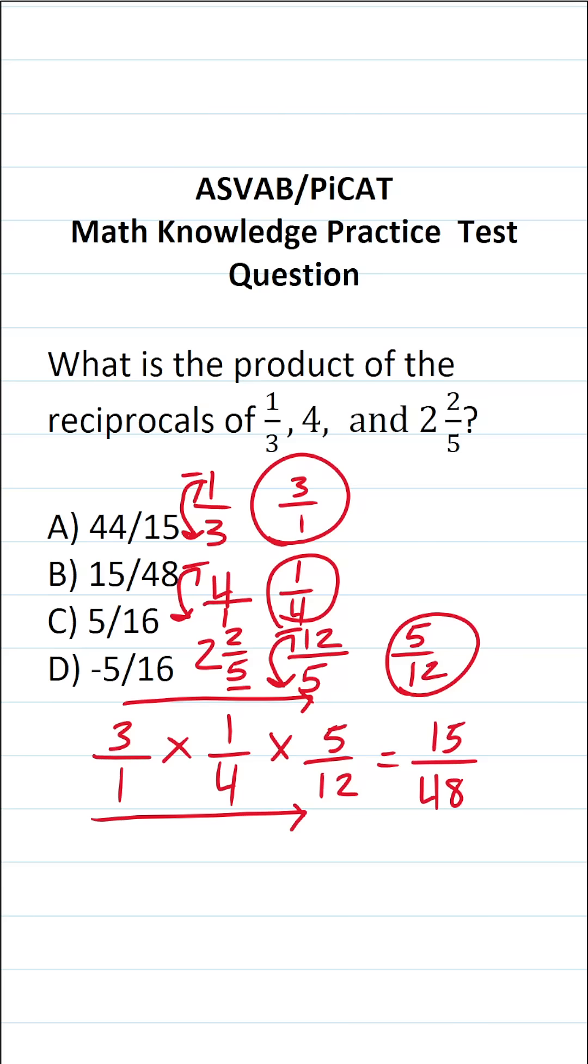Now this is not the correct answer because we can simplify this fraction. You should recognize that 15 and 48 have a common factor of three. 15 divided by three is going to be five. 48 divided by three is going to be 16.